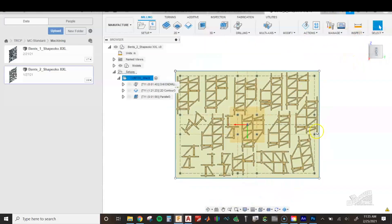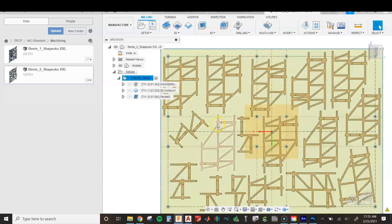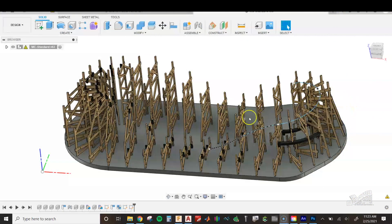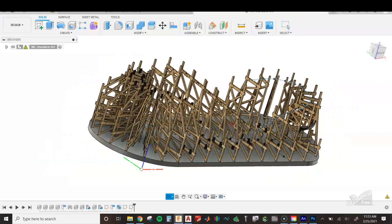This is of course exaggerated—it doesn't need to be this far apart. But realistically, off of two of these sheets I can machine the entire coaster in less than three hours.